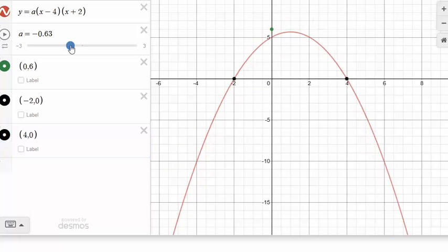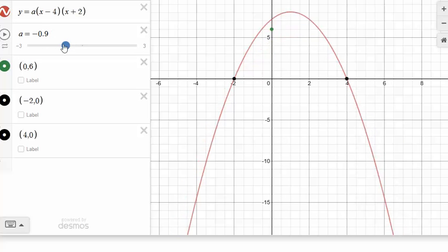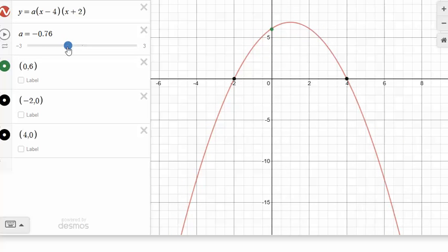Changing a doesn't change my x-intercepts, but it changes my y-intercepts. So it looks like just guesstimating around -0.76 is what my a value is going to need to be in order for this to work. But we don't always have Desmos, right? So how do I find this a value out algebraically?